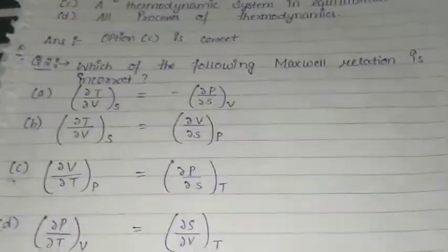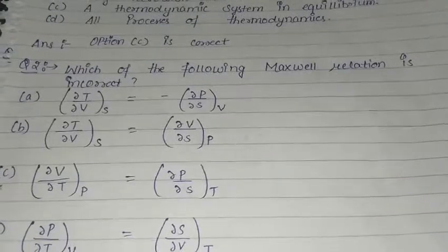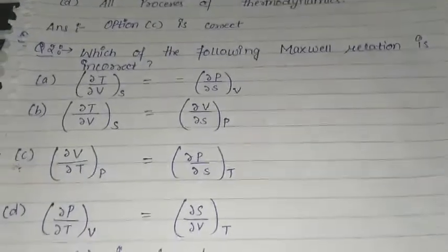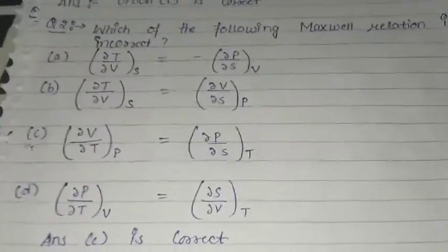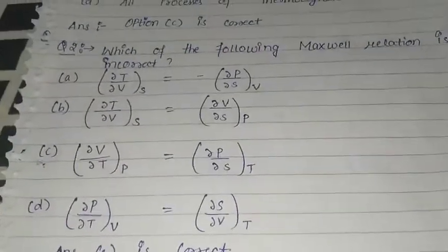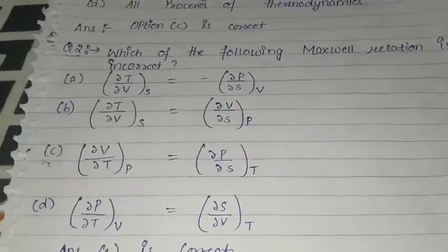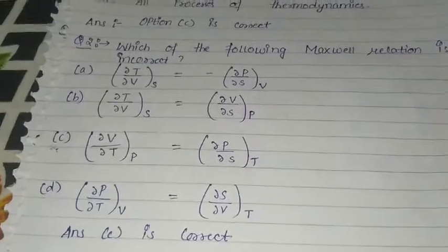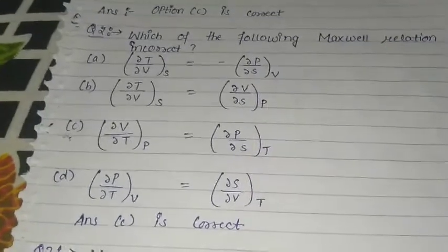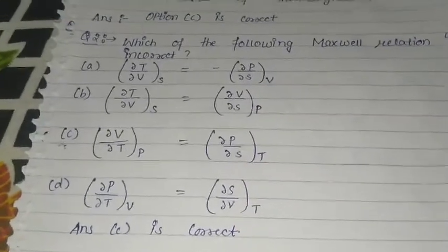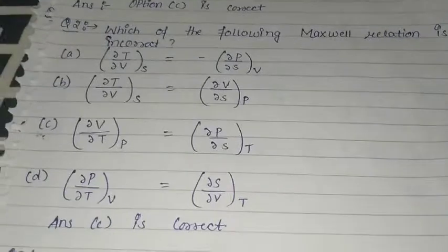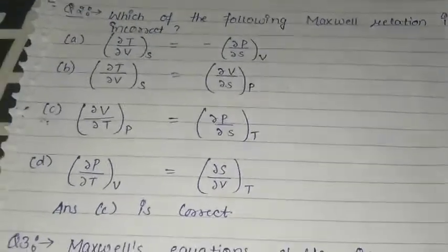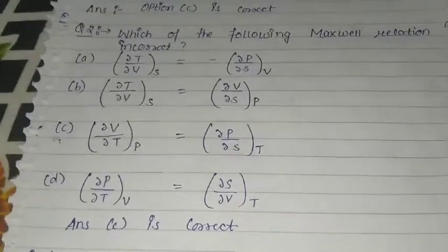Question number two: Which of the following Maxwell's relations is incorrect? You have four relations — you have to see which one is incorrect. Here option C is incorrect. The relation del V by del T is equal to del P by del S is incorrect.